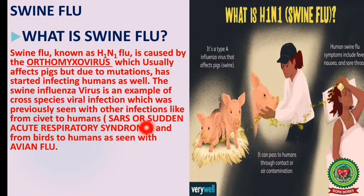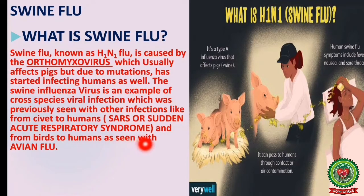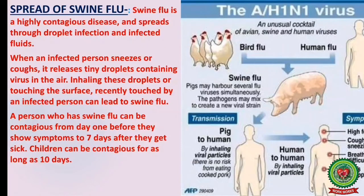That cross-species infection from civet to humans is known as SARS — Sudden Acute Respiratory Syndrome — and from birds to humans as seen with avian flu. This type of effect is called a zoonotic effect, meaning it can pass from animals to humans.